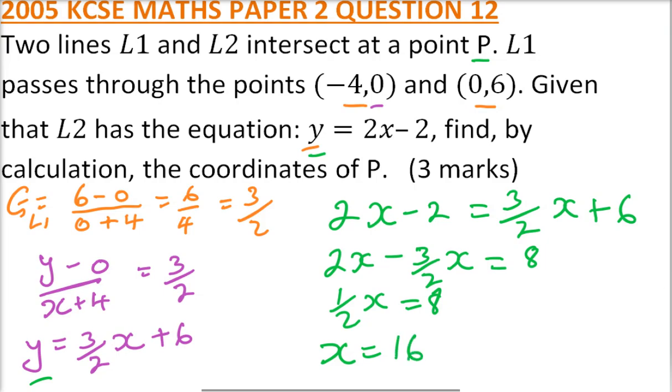Now we have 16, so we can substitute our x in this equation and say y equals 2 multiplied by 16 minus 2. So that will be equal to 32 minus 2, y is 30.